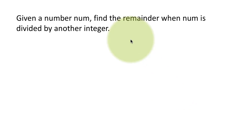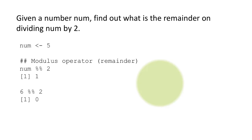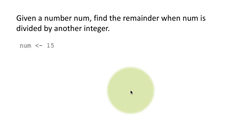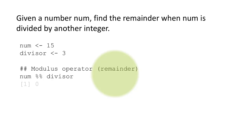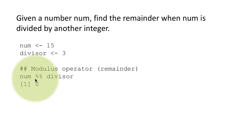For the modulo operator, what you put on the right-hand side need not necessarily be a constant — it can be a variable. So num is 15 and divisor is 3. I can do num %% divisor to get the remainder. Of course, in this case the remainder is going to be 0 because 3 completely divides 15. It's just another operator like plus, minus, multiply, or divide, except that it gives you the remainder.